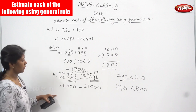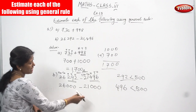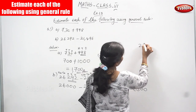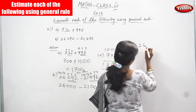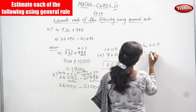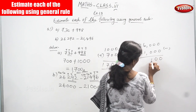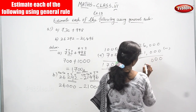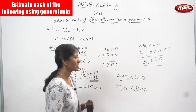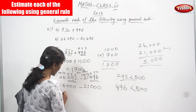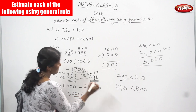Now we have done the estimation. We are going to subtract 26,000 minus 21,000. Subtracting: 0 minus 0 is 0, 0 minus 0 is 0, 0 minus 0 is 0, 6 minus 1 is 5, and 2 minus 2 is 0. It is not necessary to write the leading zero. So the answer is 5,000.